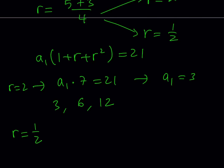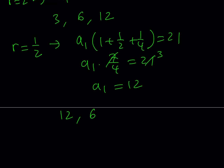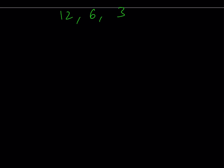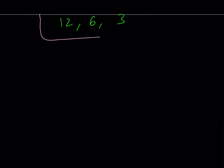Both solutions satisfy the original equations — they're the same set of numbers in different orders. So to summarize, we end up with 3, 6, and 12 in different orderings as our final result. And this brings us to the end of this video.